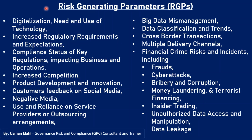Here is a one-slide overview of the possible RGP bifurcations. The first is digitalization — the need and use of technology in the institution. Risk managers and CROs are required to identify the level and need of using technology or core applications. Further, they need to keep an eye on increased regulatory requirements and the expectations of regulators. They need to know the compliance status of key regulations which impact business and operations, and for this they are required to collaborate with the compliance team of the institution.